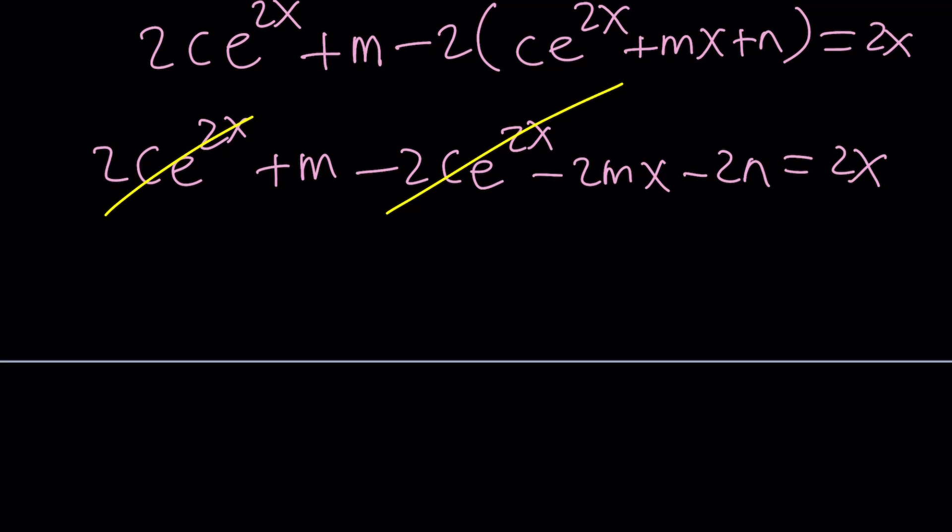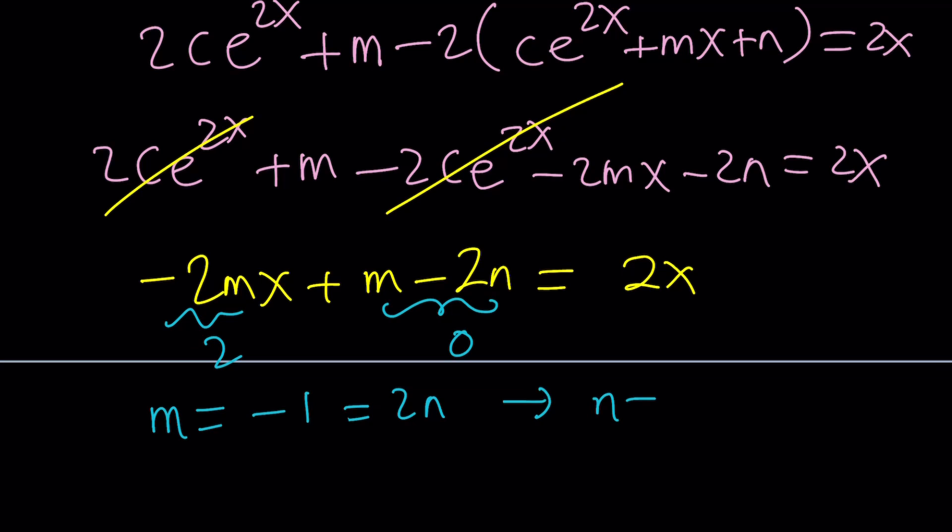And here, we can write this as negative 2mx plus m minus 2n. And these are polynomials that are equivalent, so the coefficient of x's have to be the same on both sides. This means m is equal to negative 1, and this is equal to 0, because there is no constant on the right-hand side, which means m is equal to 2n, which means n is equal to negative 1 half.